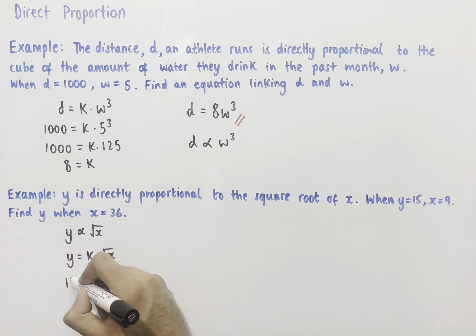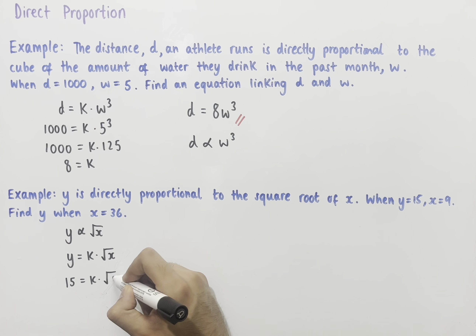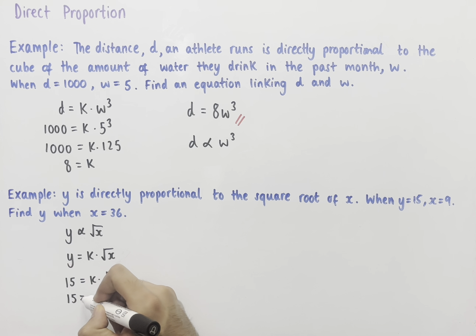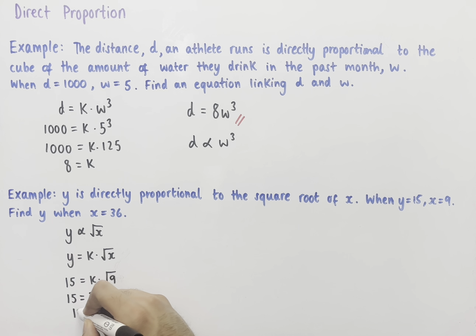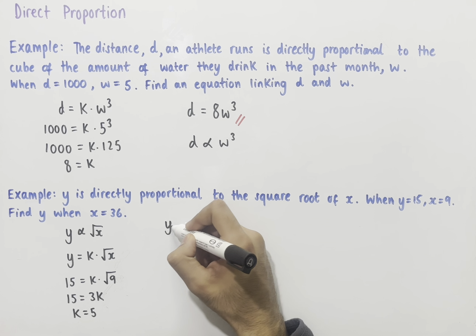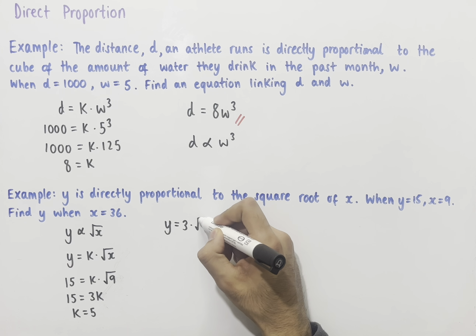We get 15 equals k multiplied by the square root of 9. The square root of 9 is 3, so we get 15 equals 3k. Therefore k equals 5 after dividing both sides by 3. Now we can substitute this back into the equation, giving us y equals 5 multiplied by the square root of x.